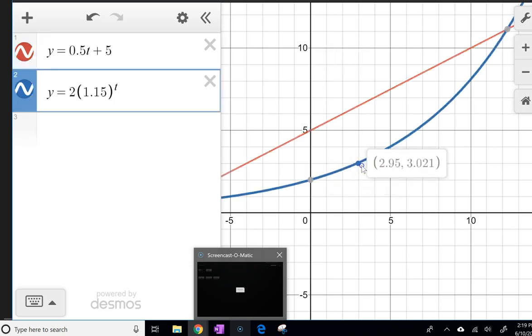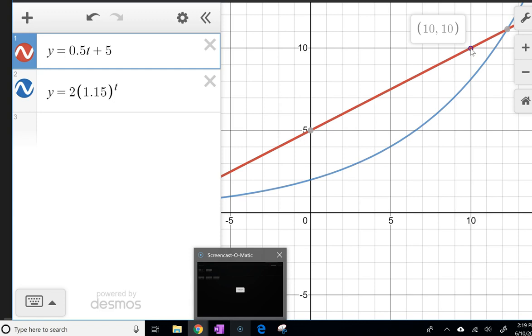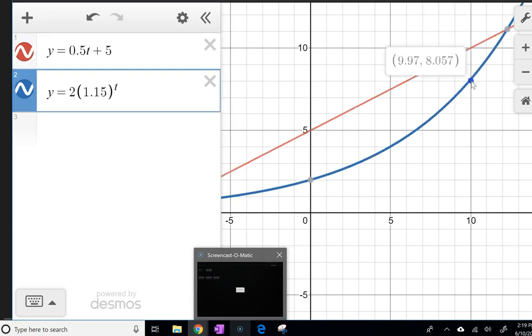So at first, it makes sense to invest in Calcurama if you're only in it for 10 years because it's still higher for Calcurama at 10 years than it is for Computafest, Calcurama being at 10 million after 10 years, and Computafest being at roughly 8 million after 10 years, 8.091.